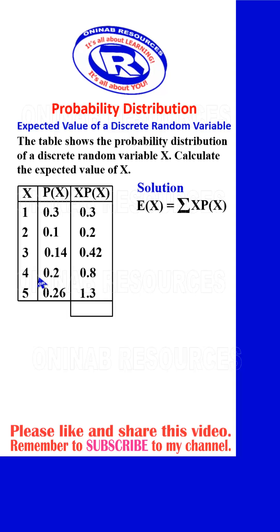So the next thing is to sum up the column XP(X). 0.3 plus 0.2 gives 0.5. Plus 0.42 gives 0.92. Plus 0.8 gives 1.72. And 1.72 plus 1.3 gives 3.02.